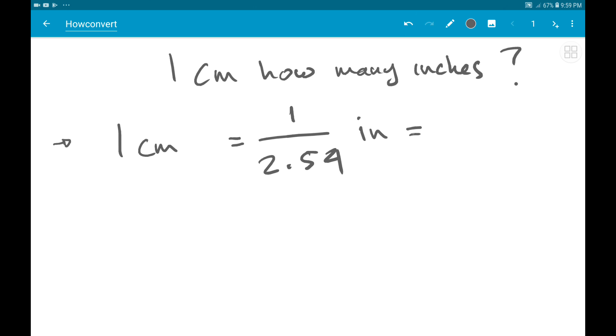One divided by 2.54 equals 0.393701. But for the precise value, we need to use this for calculation. Okay, let's create an example.